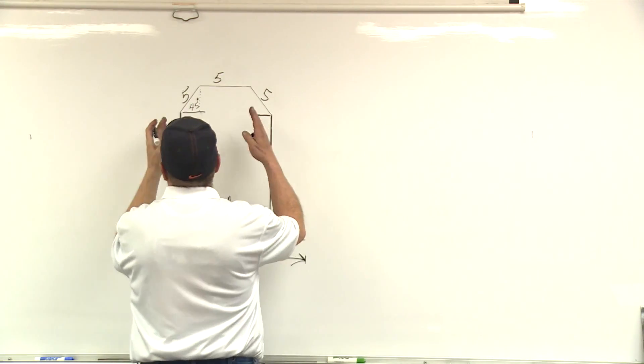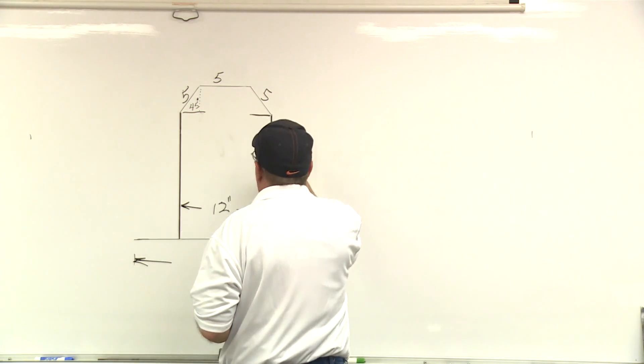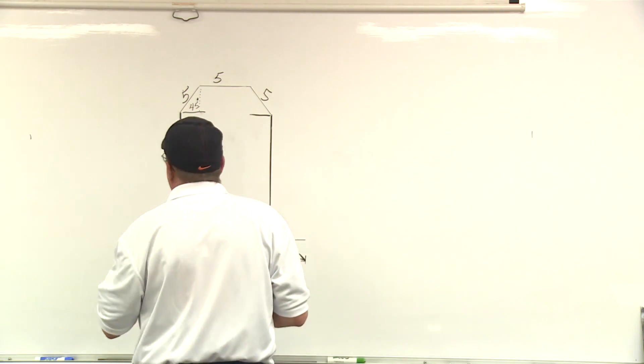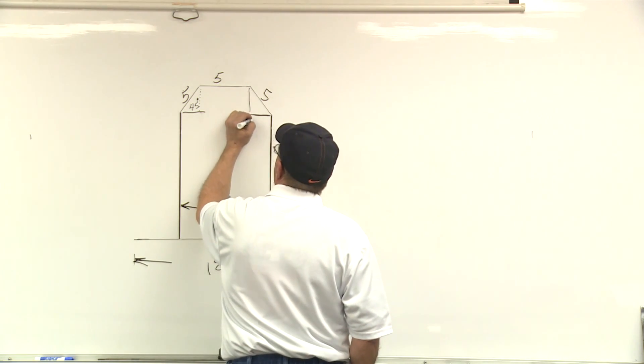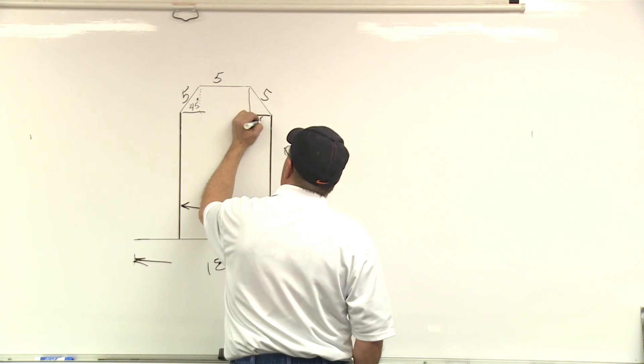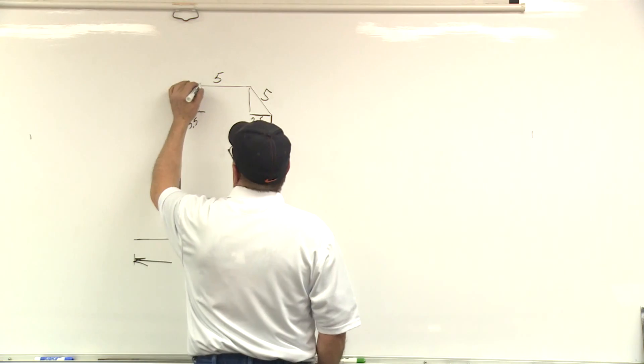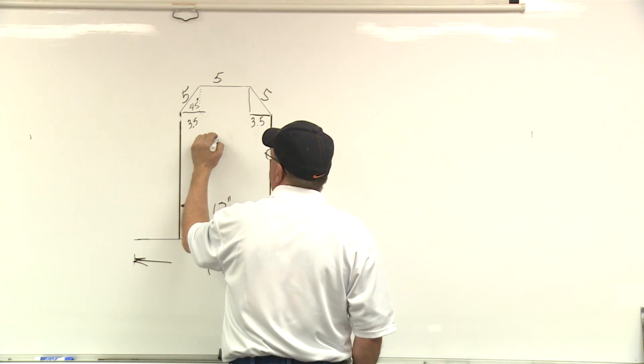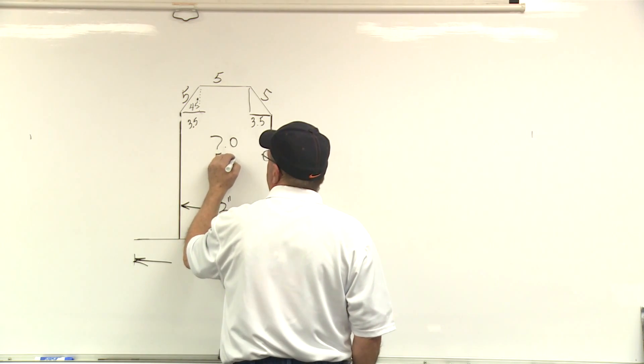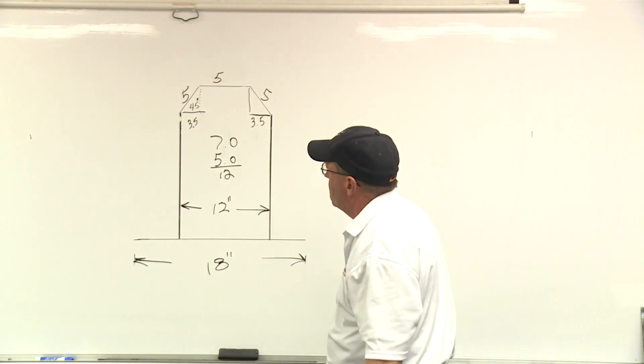Okay, and then we're cutting 22 and a half degree angles on them. Five times 0.707 gets you this distance here, 3.5. We do that again on this side, 3.5. 3.5 times two is seven plus five is 12 and that's what the customer wanted.